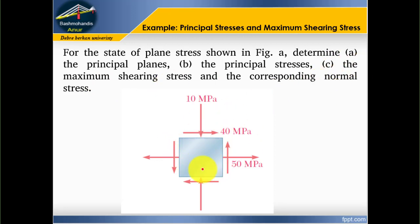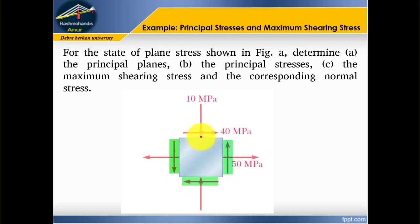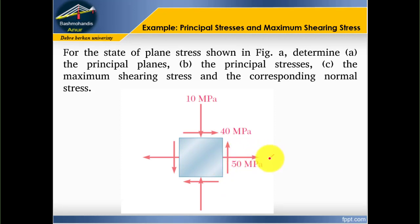I am going to write the state of plane stress on the plane. The shearing stress shown on the plane is 4 MPa. These are the two faces parallel to the shear stress. Perpendicular to the face of the element, the normal stress shown in the plane — here it is 50 MPa and this is 10 MPa.